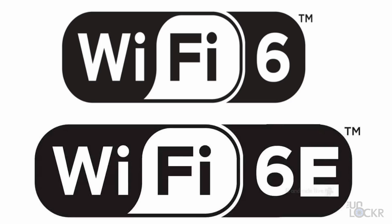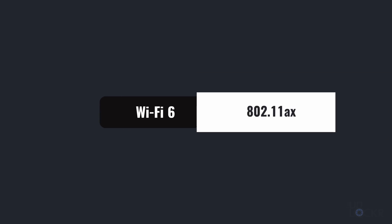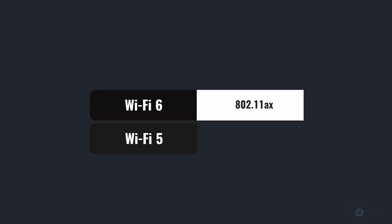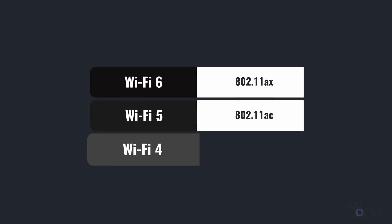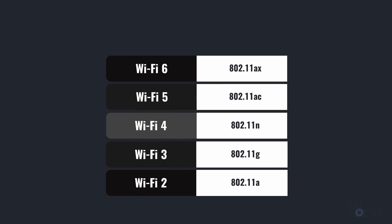So firstly, what's up with the name? Wi-Fi 6 and Wi-Fi 6E are called that because of a collective effort by the Wi-Fi Alliance, the industry body that tests and certifies Wi-Fi products, to help people understand the different Wi-Fi standards. Wi-Fi 6 is the name for the new 802.11ax standard, where Wi-Fi 5 is the new name for 802.11ac, Wi-Fi 4 is the new name for 802.11n, et cetera.